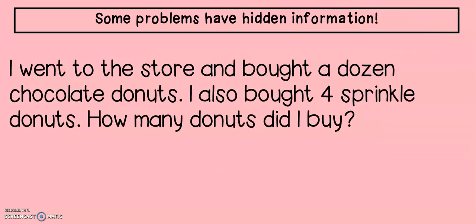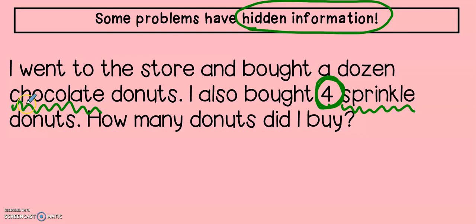Here is our last problem for today's lesson. This one also has some hidden information. See if you can spot where they hid it. I went to the store and bought a dozen chocolate donuts. I also bought four sprinkle donuts. How many donuts did I buy? Hmm, this one is tricky. I see that I have two different types of donuts. I have chocolate donuts and I have sprinkle donuts. But I only have one number. I'm wondering where my hidden word is. Let's read that first sentence about chocolate donuts again. I went to the store and bought a dozen chocolate donuts. Have you ever heard of that word before, a dozen?